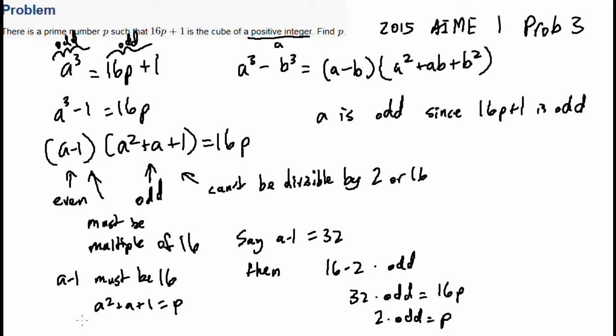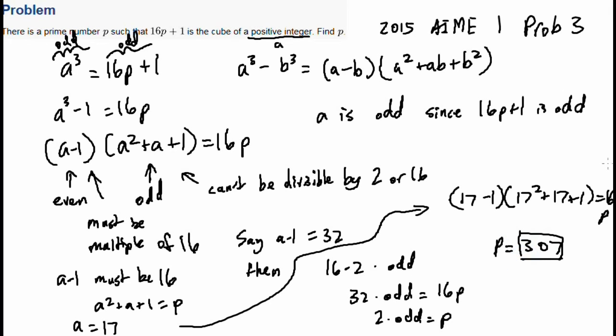Since if a minus 1 had any other factors times 16, then p would share those factors. And since p is prime, that's not possible. So if a minus 1 is 16, a squared plus a plus 1 equals p. Okay, so a equals 17 because a minus 1 must equal 16. Which means that, of course, 17 minus 1, 17 squared plus 17 plus 1 equals 16, p of course equals 307. And that's great. We got it. We got the answer. That's the answer.